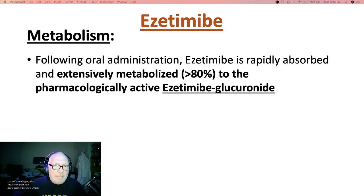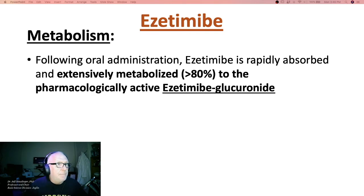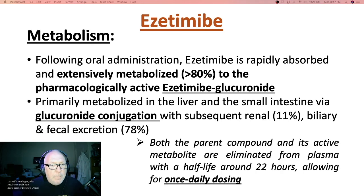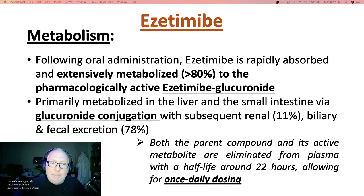Ezetimibe is rapidly absorbed and extensively metabolized to its glucuronide conjugate. This occurs in the liver and the intestine via UDP-glucuronosyltransferases. Both the parent compound and its active metabolite are eliminated from plasma with a half-life of around 22 hours.